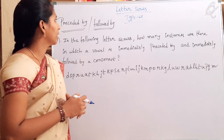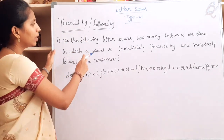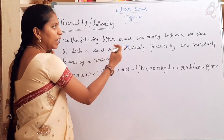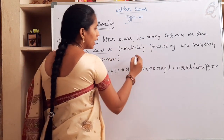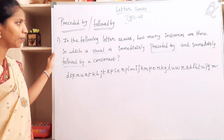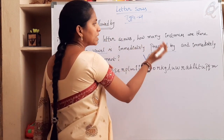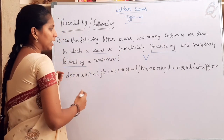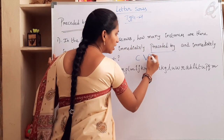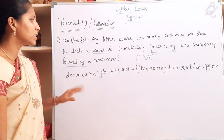This is very simple. The examples are related to 'preceded by' and 'followed by'. In the following letter series, how many instances are there in which a vowel is immediately preceded by a consonant and immediately followed by a consonant? Preceded by means the previous letter is a consonant, and the after letter is also a consonant. Find out this type of instance in the series.